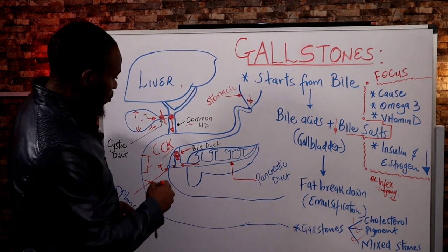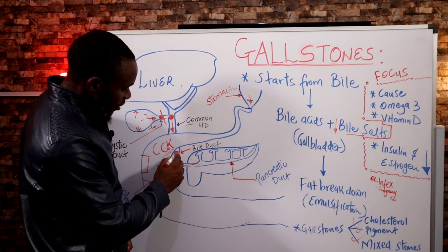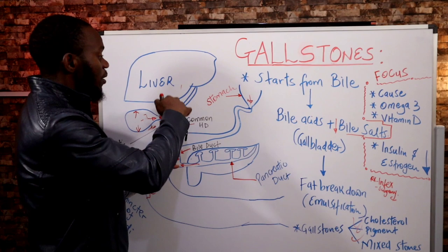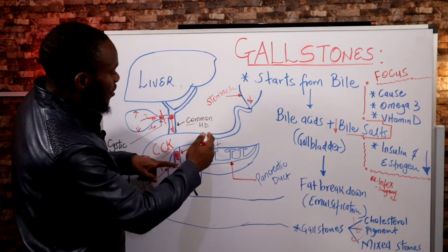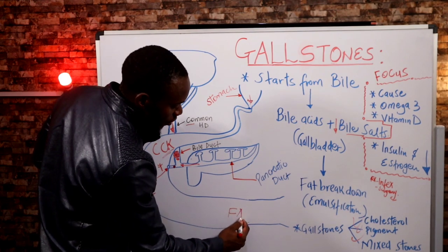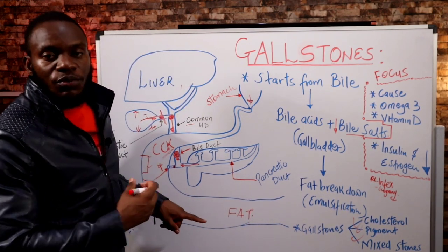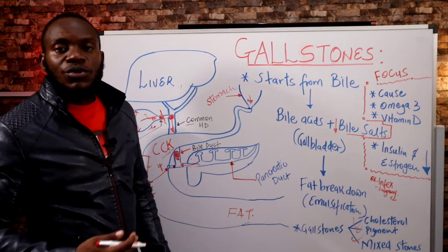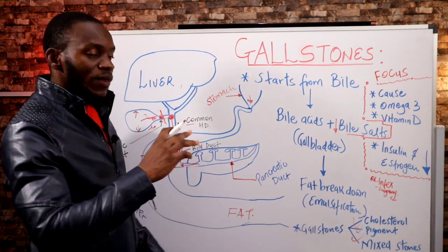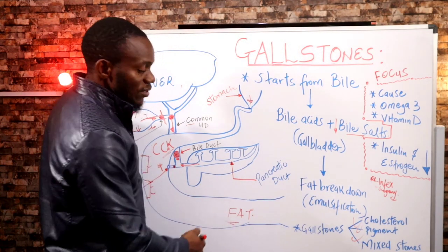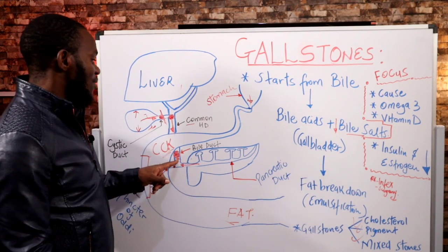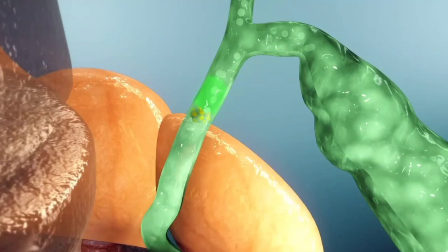When you block the common hepatic duct or bile duct, components from the liver cannot flow in, and bile starts building up. Because bile juice is not reaching the small intestines, you pass stool with a high fat content — a condition called steatorrhea. In the toilet, when you try to flush, the stool floats, doesn't go down, and has a layer of fat that is hard to flush. Additionally, bilirubin buildup causes jaundice, itchy skin, yellow eyes, and yellow skin.